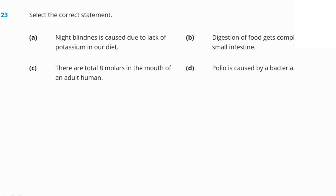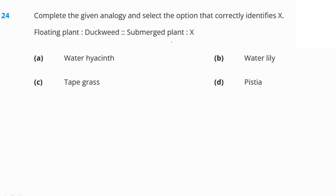Select the correct statement. Night blindness is caused by a lack of vitamin A, not potassium. Digestion of food gets completed in the small intestine — this is correct. Option B is our right answer.